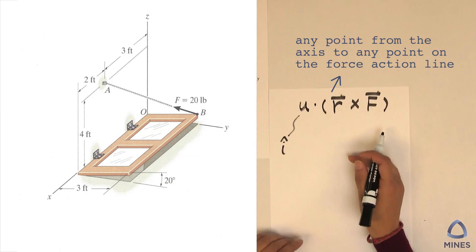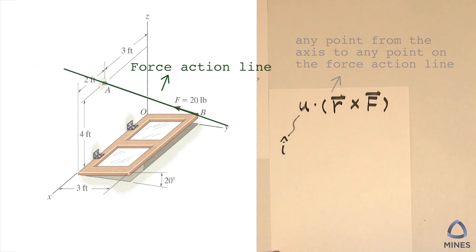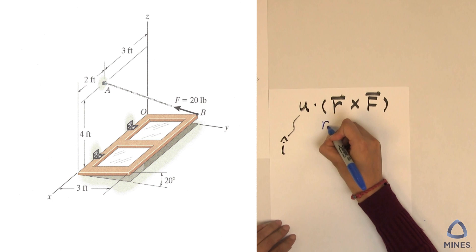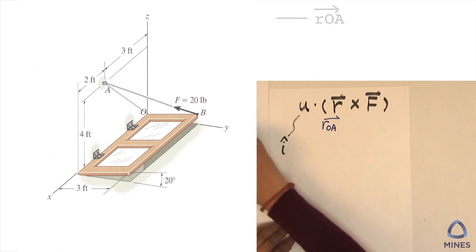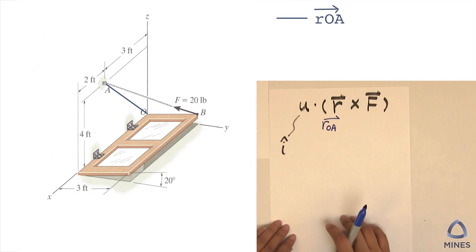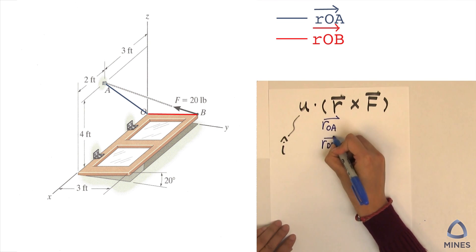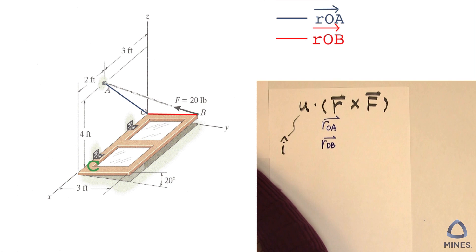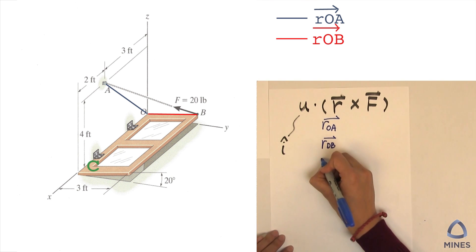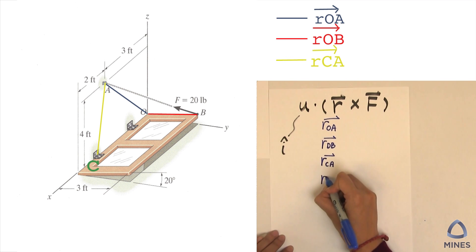Now what is r in the moment around an axis? It is any point from the axis to any point on the force's line of action, which means we are going to have a lot of options. We can use r_OA — any point on the axis which is O — to any point on the force's line of action. You might ask: can I use r_OB? Yes you can. If we mark this location as C, we can also use r_CA and r_CB.